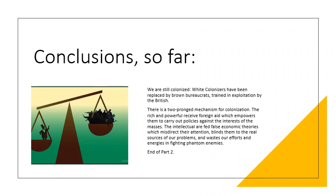We can conclude part two as follows. The colonization never actually ended — the white colonizers were replaced by brown bureaucrats and they continue to exploit the country. There is a two-pronged mechanism for this exploitation: the rich and powerful receive foreign aid which enables them to stay in power against the interests and desires of the masses, and the intellectuals are force-fed false economic theories which make them unable to recognize the real sources of the problem and waste their effort and energy fighting phantom enemies.